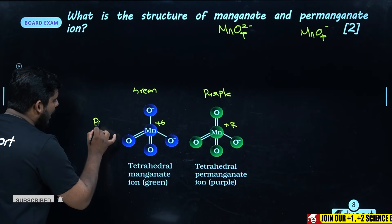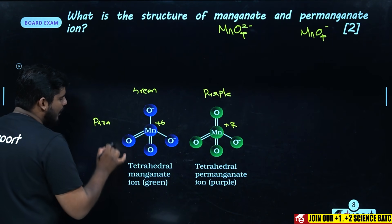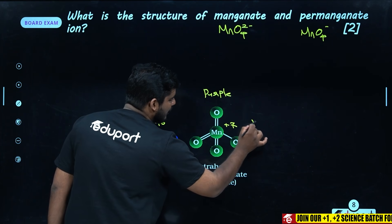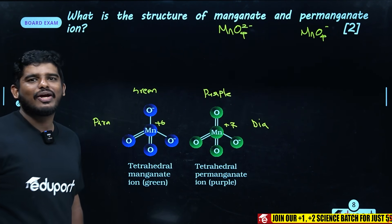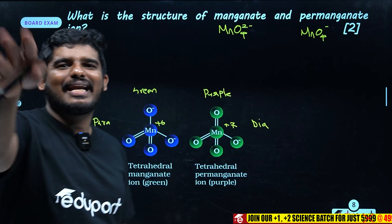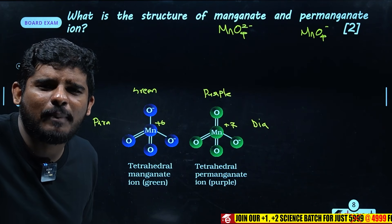Manganate is paramagnetic and permanganate is diamagnetic, due to the difference in the number of unpaired electrons at their respective oxidation states.